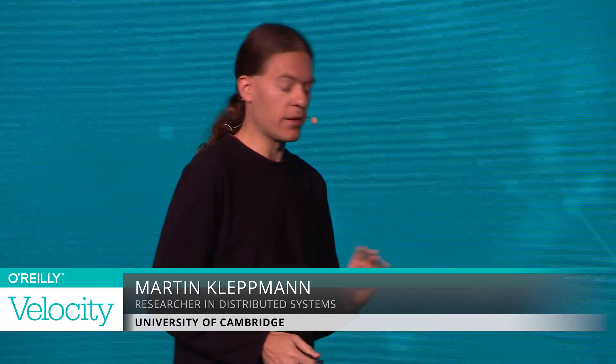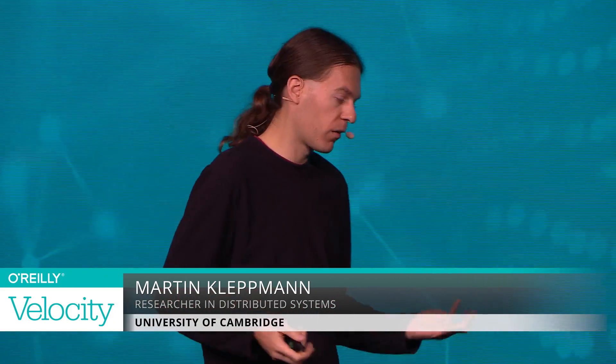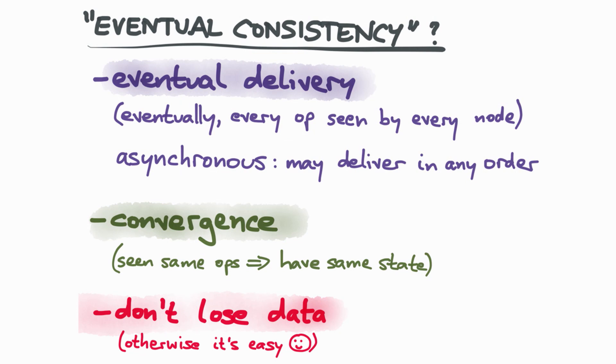And thirdly, the third one is we want to not lose any data as far as we can in this process. This seems kind of obvious, but if we were allowed to lose data, then getting everybody to converge would be easy. We'd just throw away all of the data. So I just put this in for completeness because it is actually kind of important. So these are the properties I mean with eventual consistency.